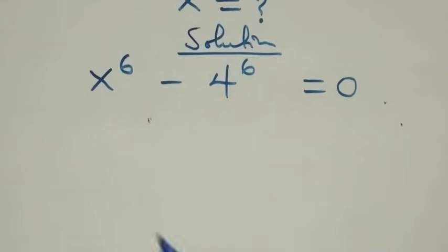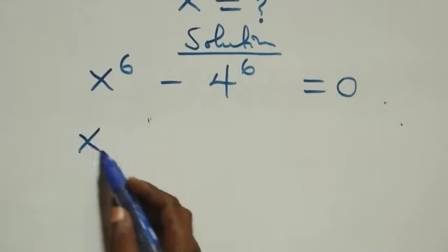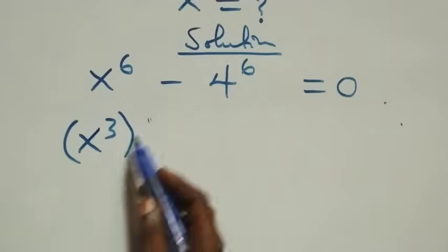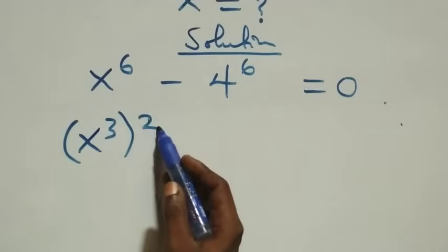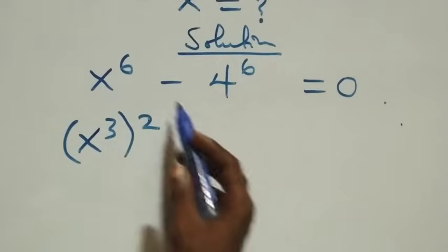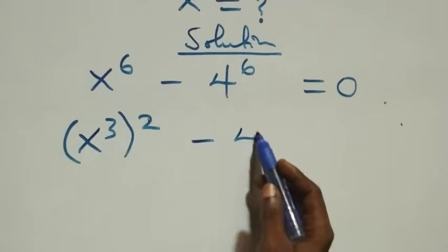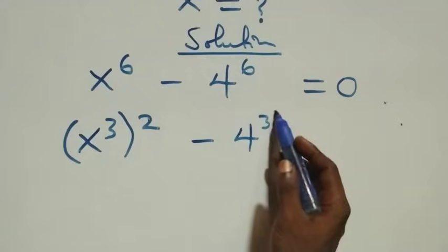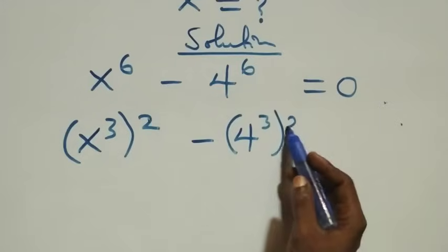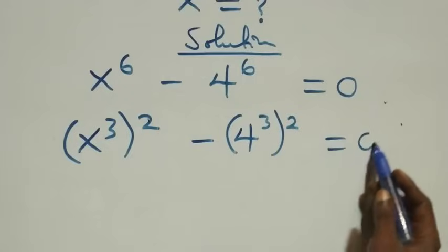The next step: we can write this as x raised to power 3, then raised to power 2 — since 2 times 3 gives us 6 — then minus 4 raised to power 3, then raised to power 2, which is equal to 0.